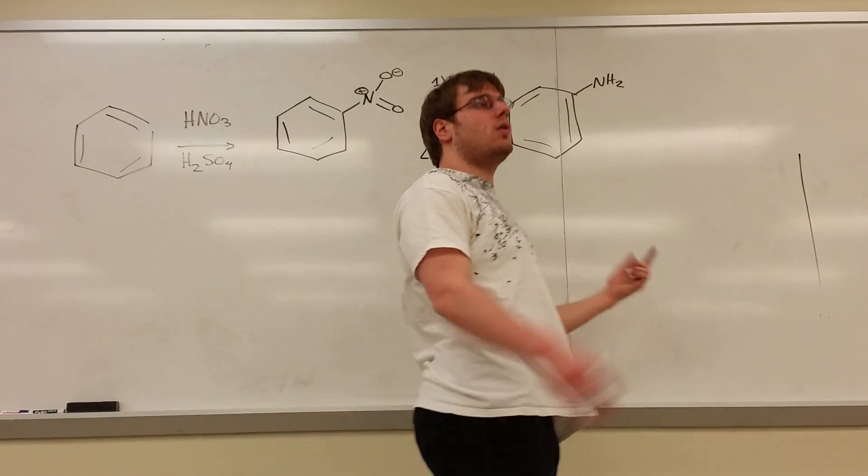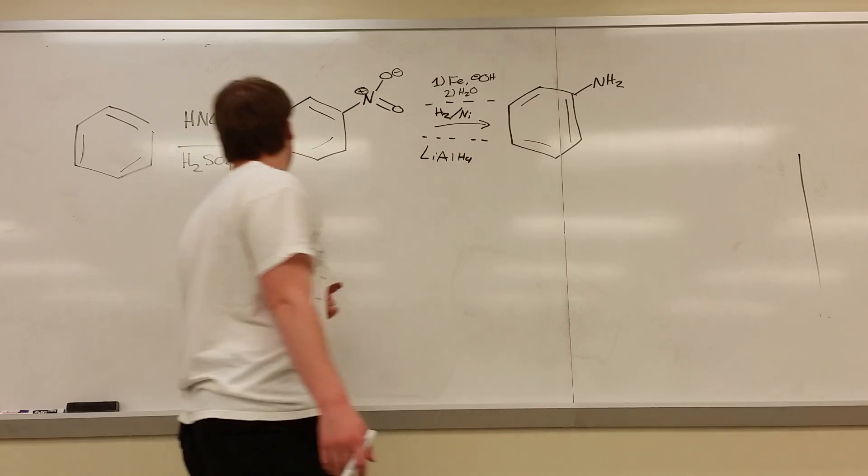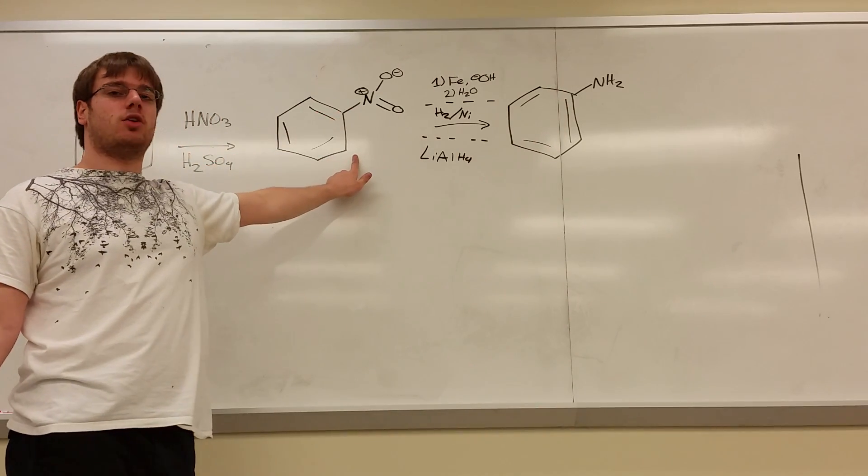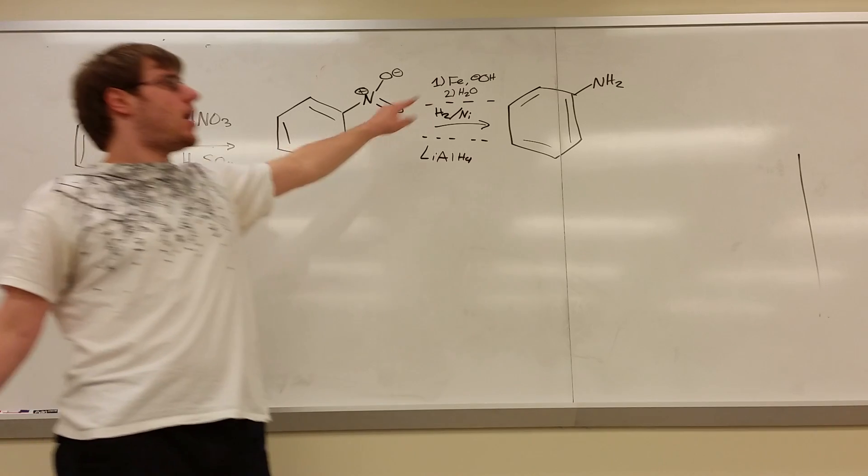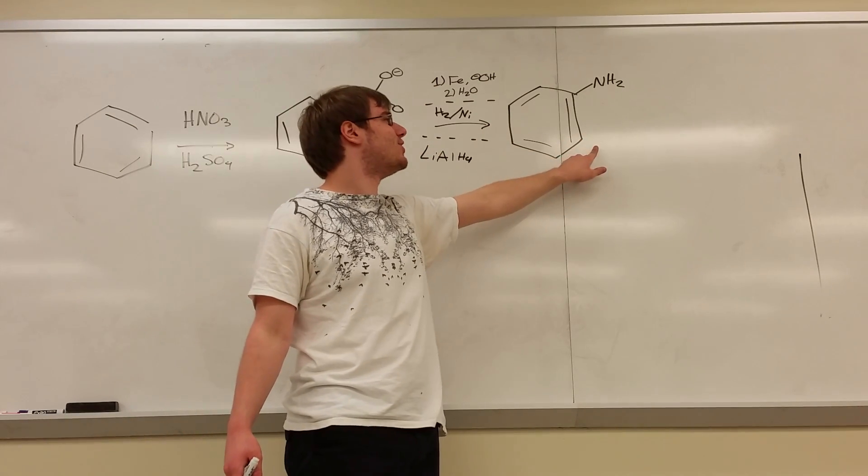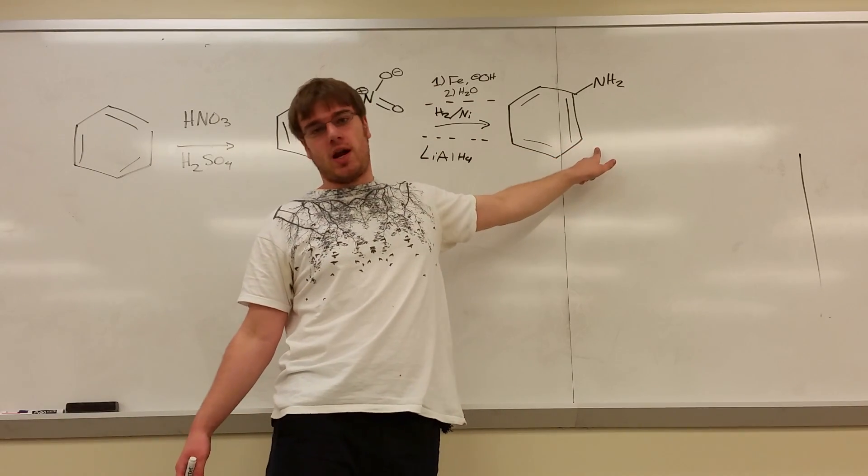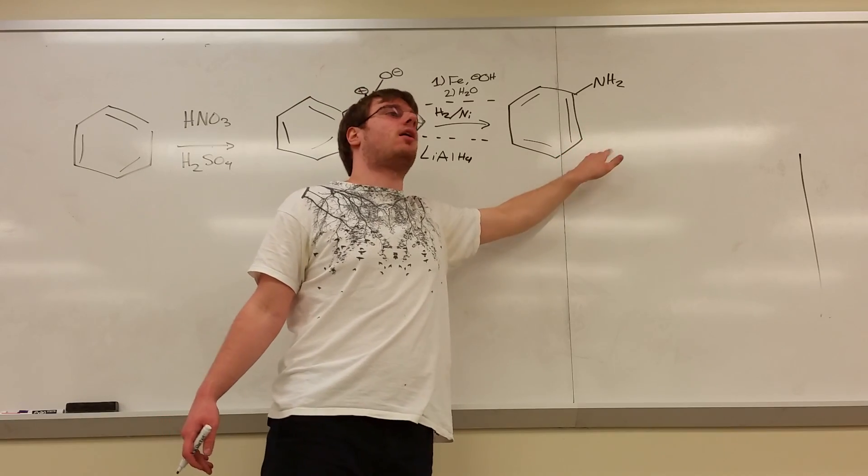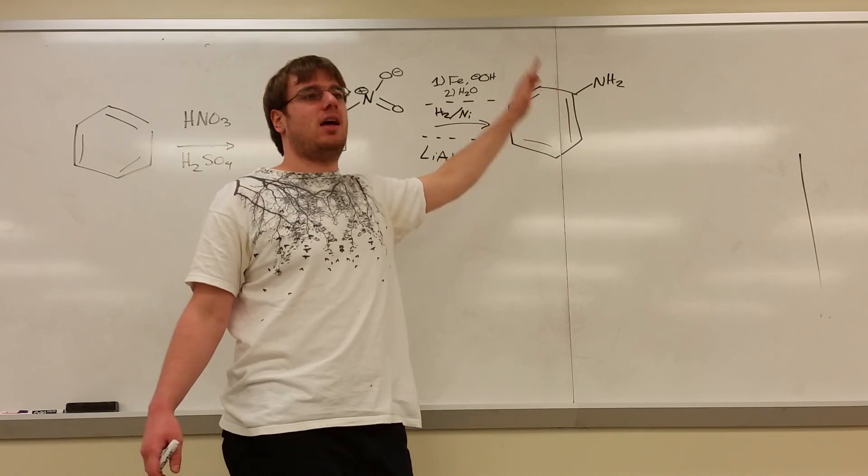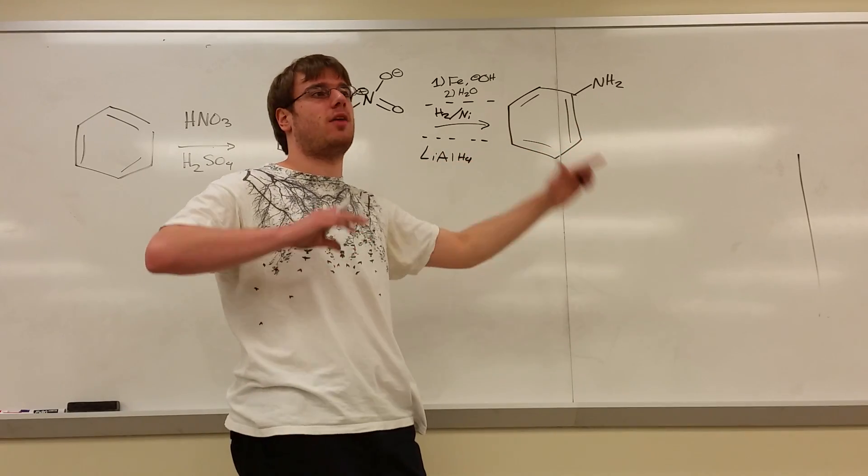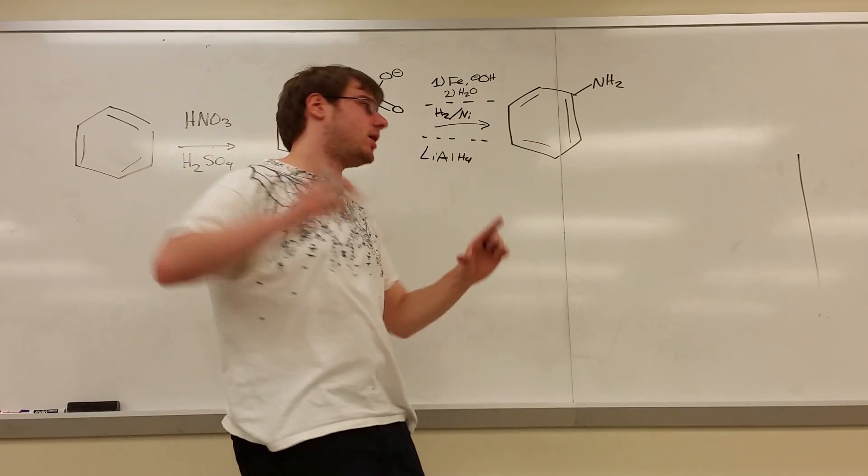And that'll reduce it to an NH2. Now why do we want NH2? Well there are a couple reasons. First of all, NO2 is a withdrawing group so it directs meta. NH2 is an electron donating group, it directs ortho-para. But there's a technicality why NH2 is not something you want to have directing, and we'll talk about that in an example we do in a couple minutes.